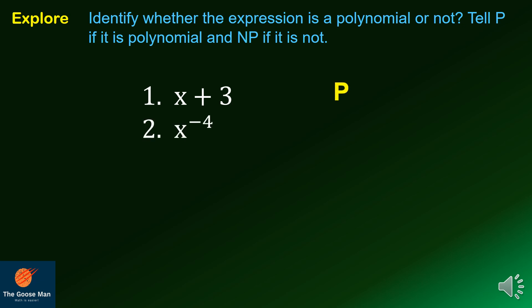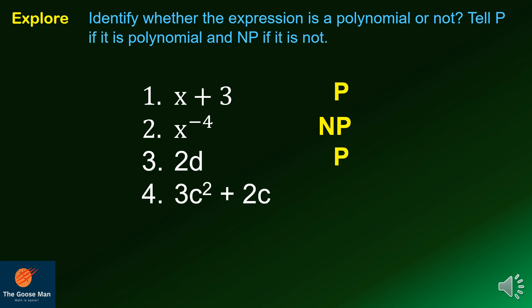Number two: x raised to negative 4 — this is not a polynomial. Number three: 2d — this is a polynomial. Number four: 3c squared plus 2c is also a polynomial. Number five: 3d raised to negative 2 plus 1 — this is not a polynomial.